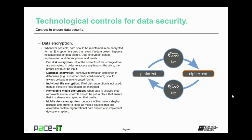One of the main technological controls used to secure data is data encryption. Whenever possible, data should be maintained in an encrypted format. Encryption ensures that even if a data breach happens, no actual loss of data occurs. Data encryption can be implemented at different places and at different levels. There is full disk encryption, where all of the contents of the storage drive are encrypted. In order to access anything on the drive, the proper security keys must be input.